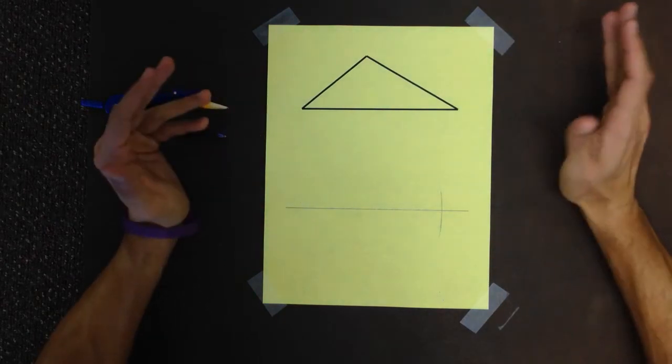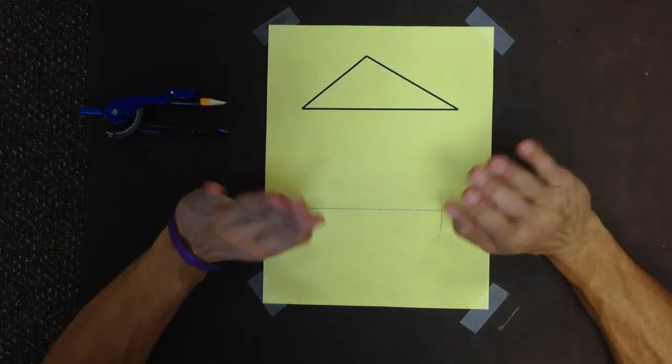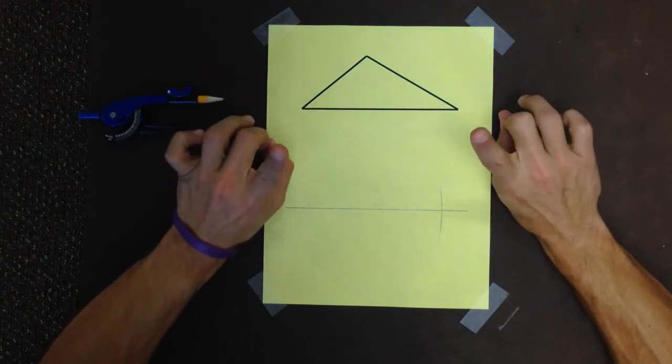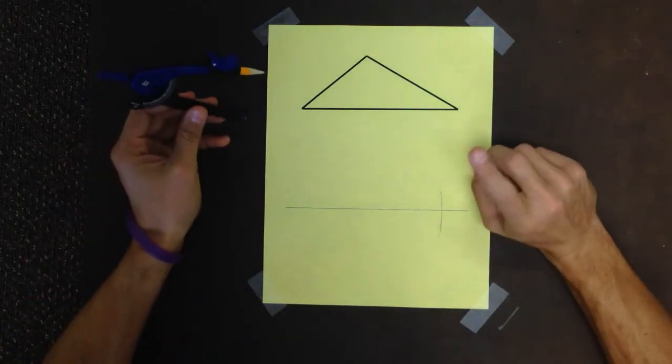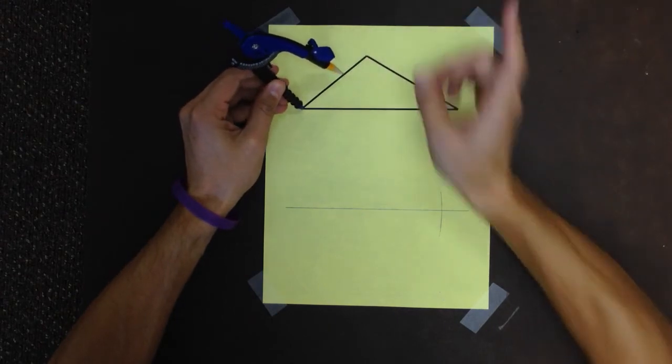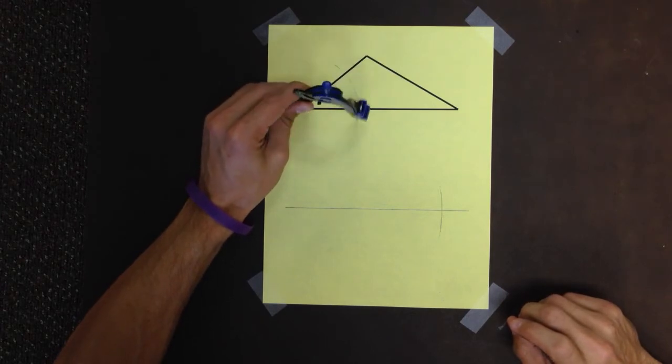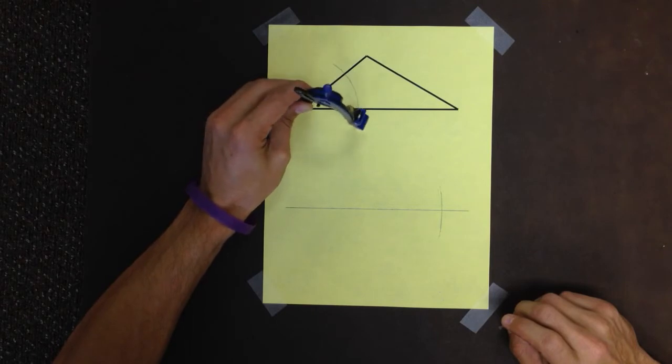Now all we're going to do is the exact same construction we do constructing congruent angles. Of course we all know what that is. But on the off chance we don't, let's refresh our memory. To construct a congruent angle, you put your non-pencil end on your vertex. You want to draw an arc that's going to intersect both sides of my triangle. Got it.